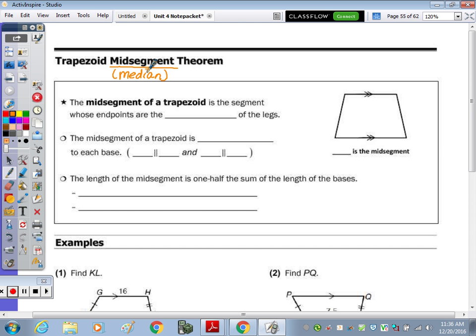Just like the midsegment of a triangle, you take the midpoints of the two legs. Put a dot where you think the midpoint is, so that equals that on one side. Then you draw the midpoint over here. The midsegment, just like in a triangle, is the segment that connects the two midpoints.